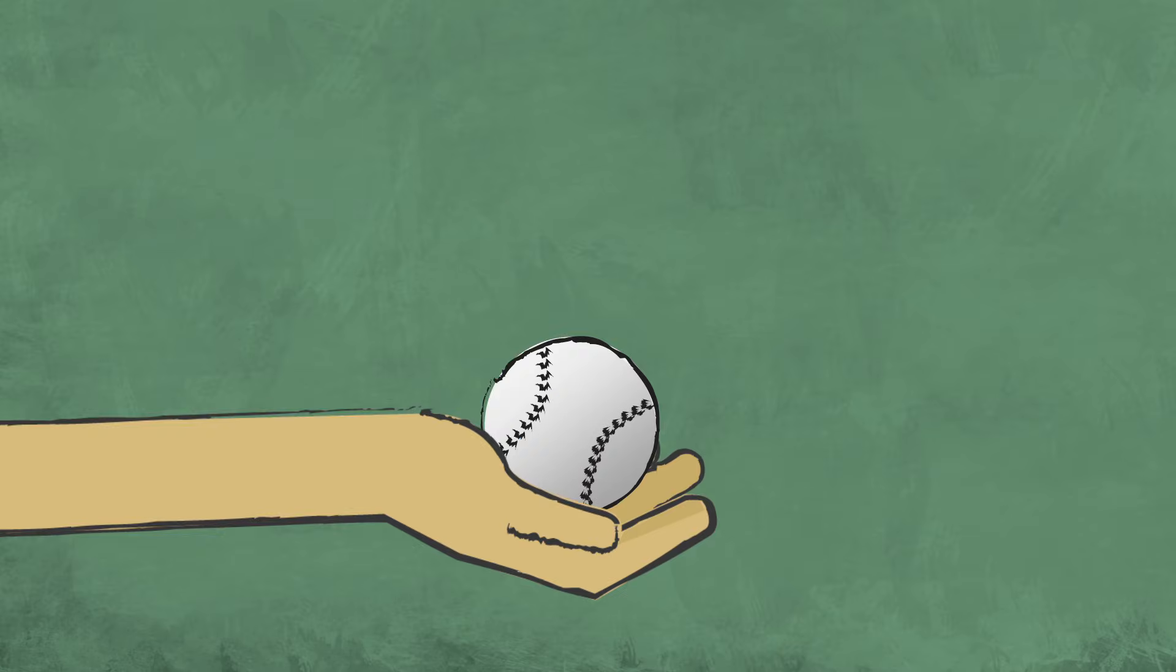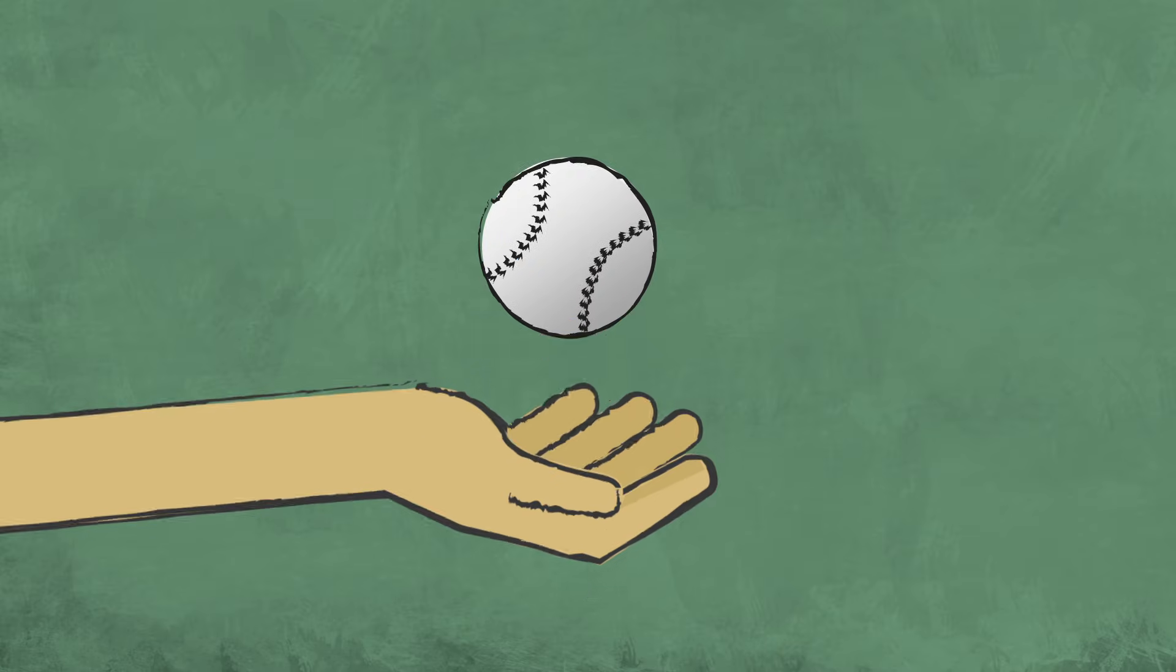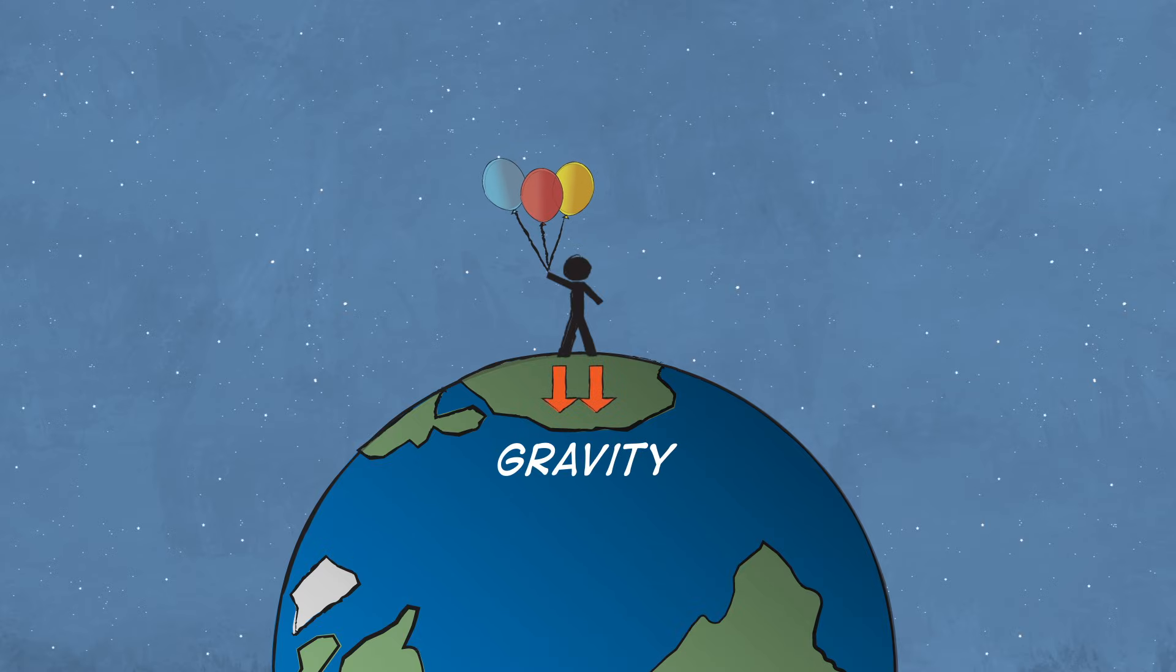If you throw a ball into the air, the ball comes right back down. That's because of gravity. The same force that holds us on Earth and keeps us all from floating away.